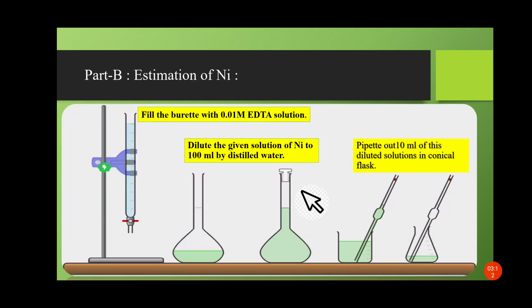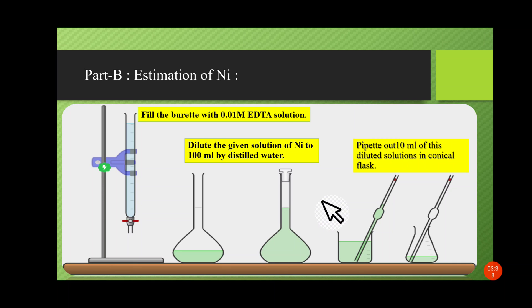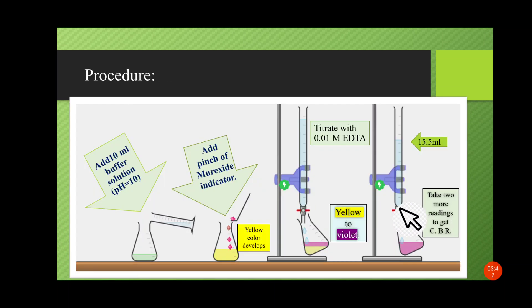Part B: Estimation of nickel. Fill the burette with 0.09095 molar EDTA solution up to the mark. The given nickel solution is diluted with distilled water up to 100 ml, made homogeneous, and transferred into a beaker. Pipette out 10 ml of this diluted solution into a conical flask. Add 10 ml of buffer solution, then add a pinch of murexide indicator — the solution becomes yellow in color. Titrate with EDTA solution dropwise.